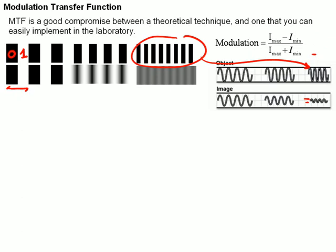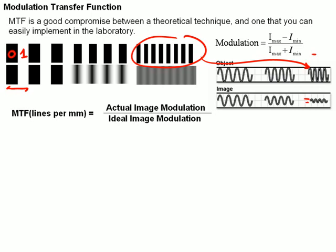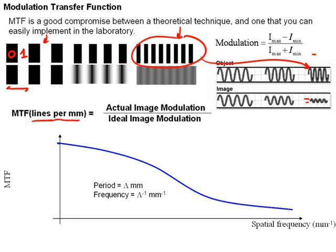You also notice that the modulation is a function of the spacing between the bars, and this leads us to the modulation transfer function, which is defined to be the actual image modulation divided by the ideal image modulation for a perfect imaging system, neglecting diffraction, as a function of lines per millimeter, where this has many lines per millimeter, and this has few lines per millimeter. So a modulation transfer function of a hypothetical system might look something like this. Notice that the vertical axis is the modulation transfer function, which will go from 0 to 1, and the horizontal axis is the spatial frequency. We define the period as the spacing between the bars in millimeters, and the frequency is simply the inverse of the period, in the same way we do it in the time domain.